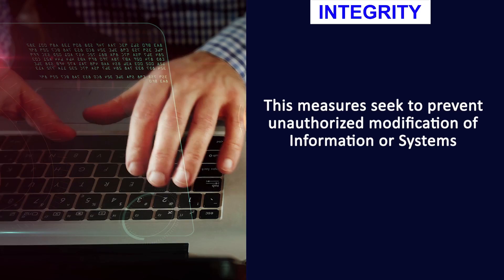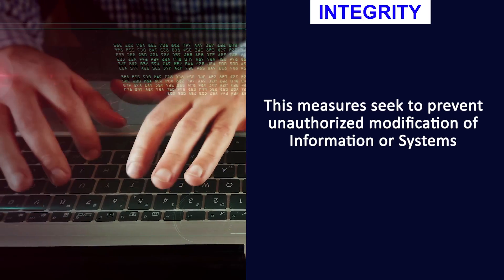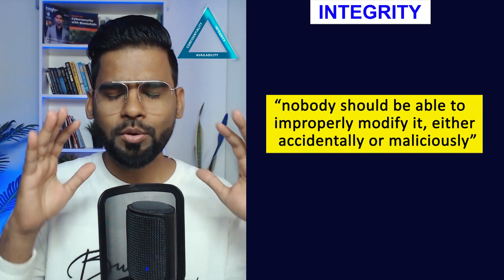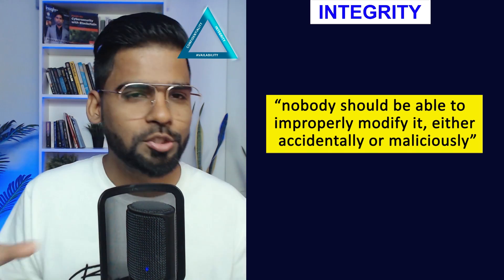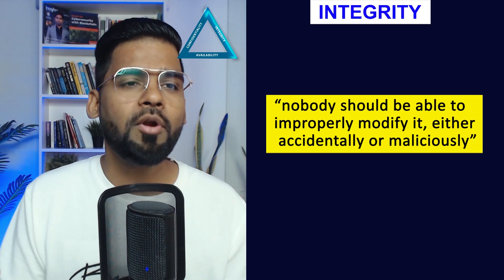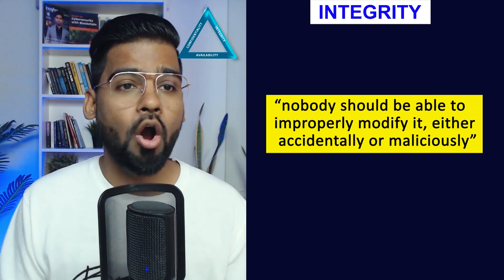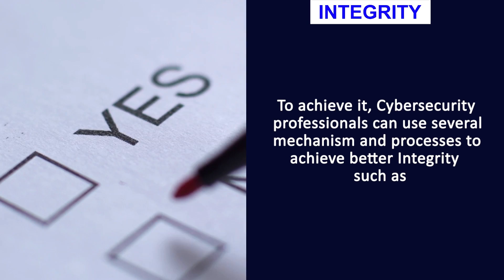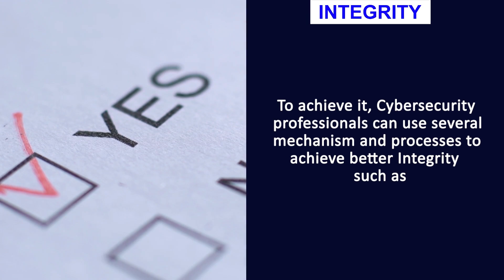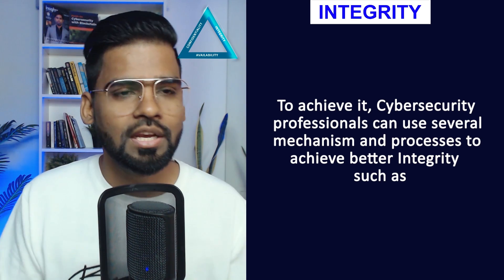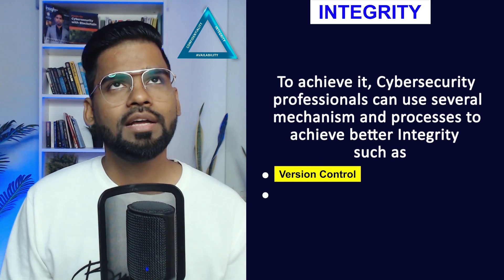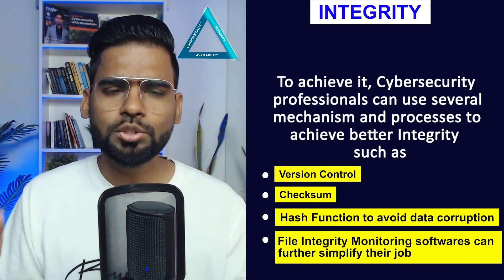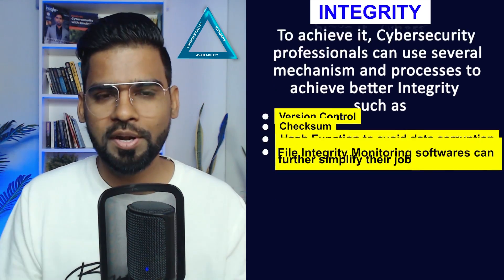Second, integrity. This measures the seek to prevent any unauthorized modification of information or the system. To keep it simple, it means that nobody should be able to improperly modify the data, either accidentally or maliciously. To achieve it, cybersecurity professionals can use several mechanisms such as version control, the checksum, hash functions to avoid data corruption, and file integrity software that can simplify their job very well.